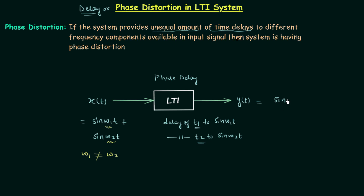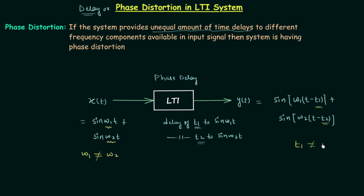So the output y(t) is equal to sin(ω₁(t − t₁)) plus sin(ω₂(t − t₂)). One thing here you can see is that the amplitude is the same — the amplitude of the two terms is the same — but the delay is different, or you can say the phase is different, therefore we use the term phase distortion. If you open this bracket you will find we have different phases, and we can say this because t₁ is not the same as t₂. This is because of the system we are using. So this is what you should know about phase distortion.